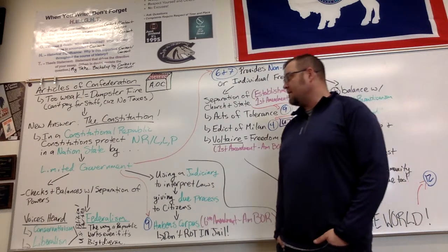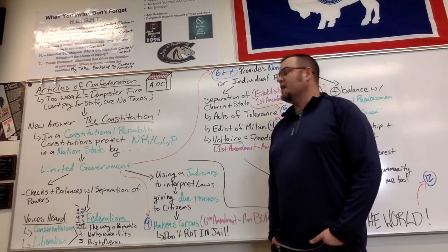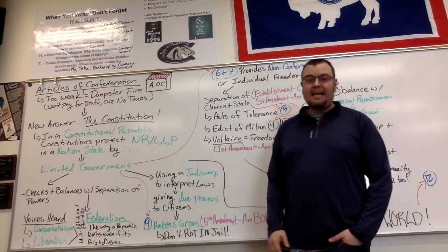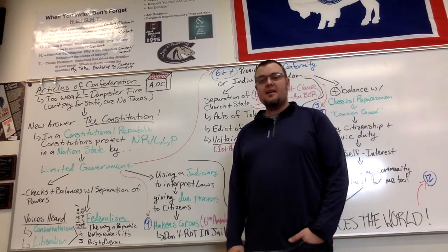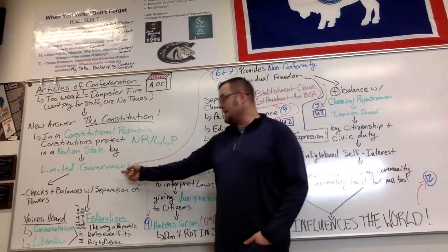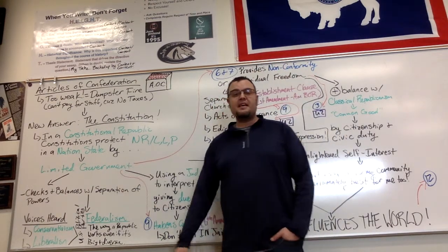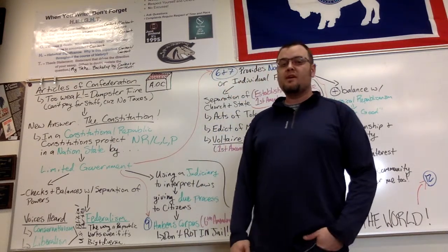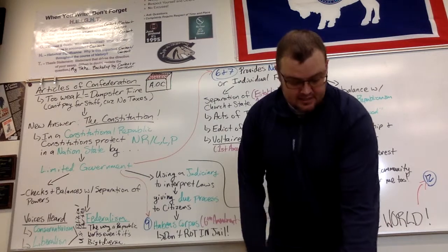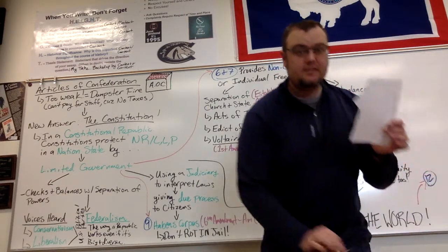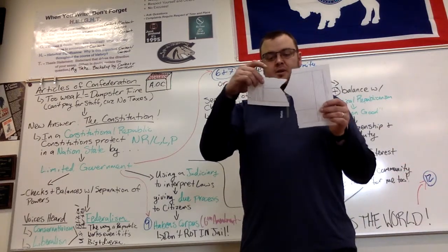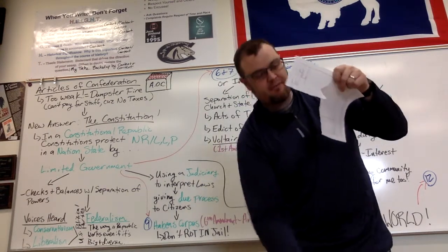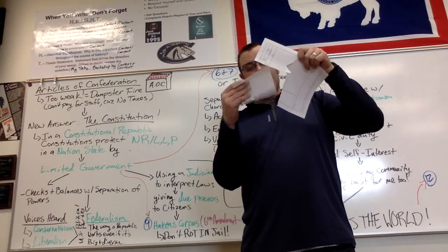In a constitutional republic, constitutions protect the natural rights — or LLP — in a nation state. How do they do that? They do it by limiting the government; they say what the government can and cannot do. What we're going to find out is federalism is going to be righted: we're going to have a larger national government, a smaller state government, and then a local government to come into it to be a federal government with our new constitution.